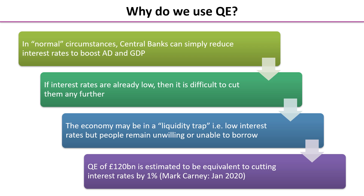Mark Carney, the previous governor of the Bank of England, in January 2020 estimated that £120 billion of quantitative easing was equivalent to cutting interest rates by around about 1%. So quite effective.